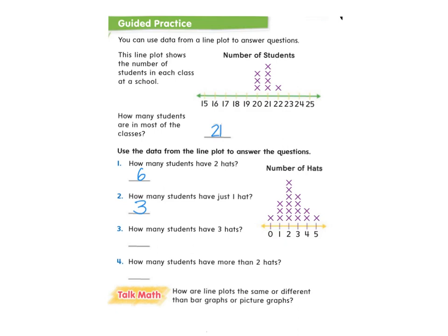Remember, it's super important that we know what our label is. Is it four hot dogs, four basketballs? Nope — it's four students, because that's what each X represents.